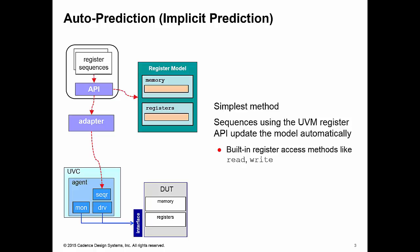In this prediction mode, we can update the model automatically. So when we do a write operation from our register sequence, this will carry out an operation on our UVC to write to the registers of our DUT. At the same time, the write operation will automatically update the appropriate register inside of your register model.